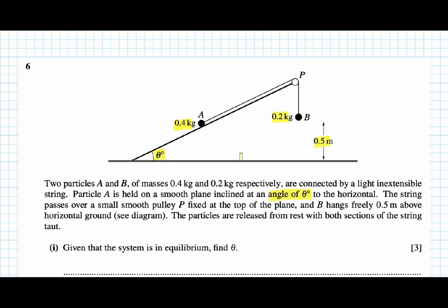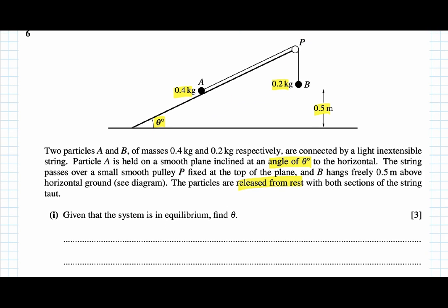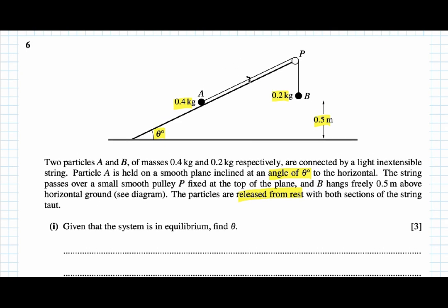Question six: two strings support particles A and B at angle θ to the horizontal on a smooth plane. In equilibrium, resolving forces gives tension equations: T_A = 4 sin θ and T_B = 2. Solving and cancelling tensions gives sin θ = 2/4 = 1/2, so θ = 30 degrees.